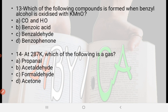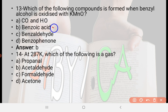Next: Which of the following compounds is formed when benzyl alcohol is oxidized with KMnO4? Option A: CO2 + H2O, option B: benzoic acid, option C: benzaldehyde, option D: benzophenone. The right answer is option B, benzoic acid. When benzyl alcohol is oxidized with KMnO4, benzoic acid is formed.